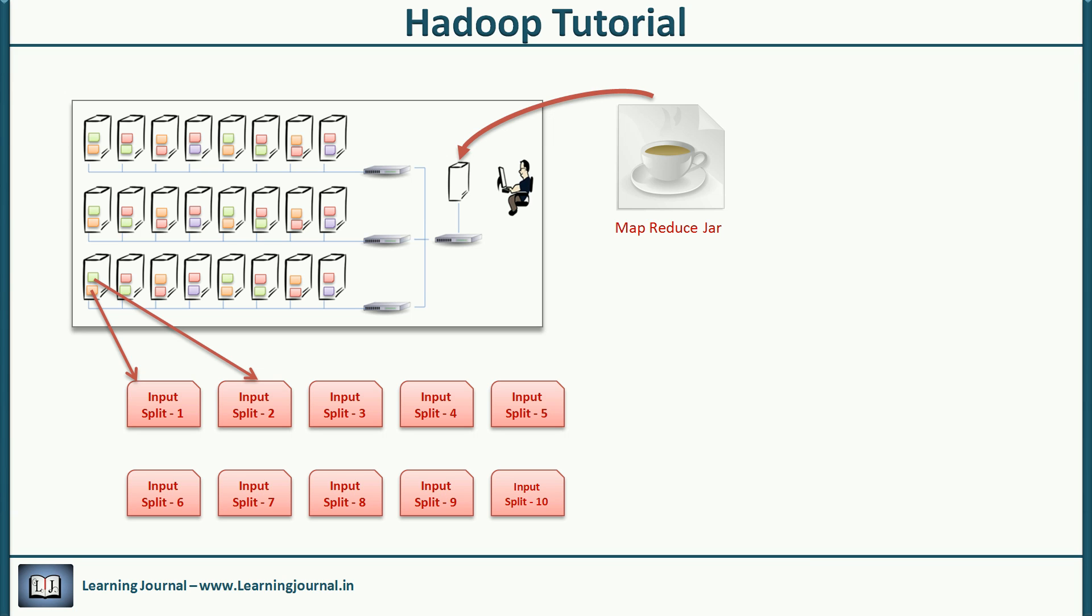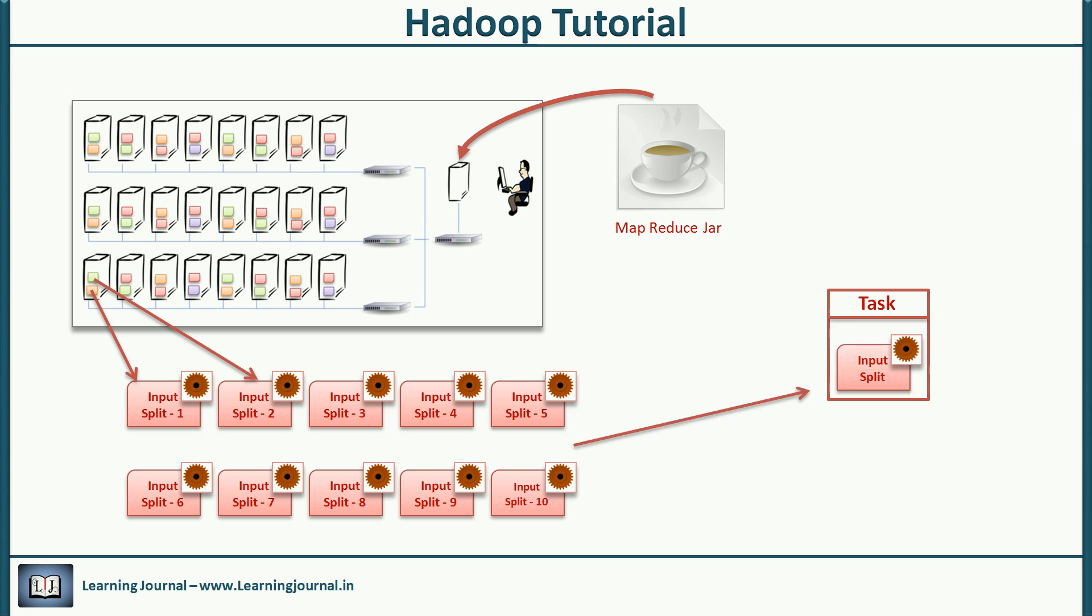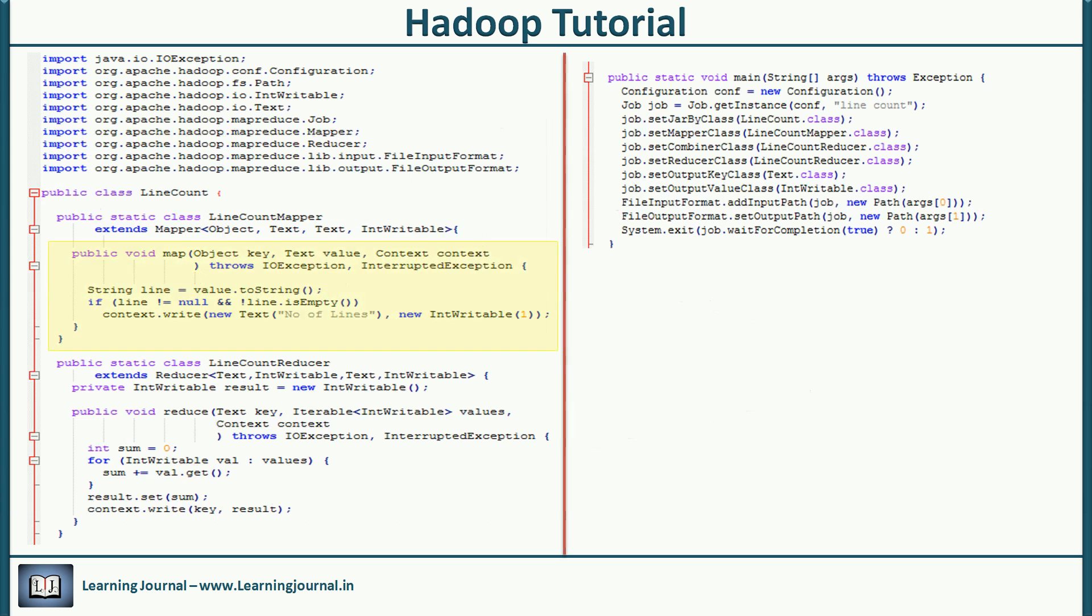So if HDFS has broken your file into 100 blocks, it's most likely that the framework will create 100 input splits. Once you have your input splits, the rest is simple: execute one instance of the map function for each split and track the progress. The framework will create several map tasks. Each task is a combination of one input split and one instance of your map function. It will assign them a unique ID and schedule them on different computers in your cluster.